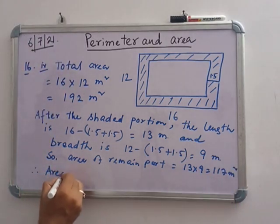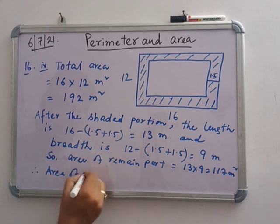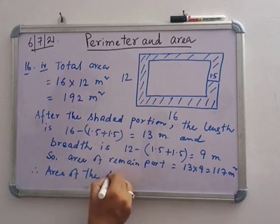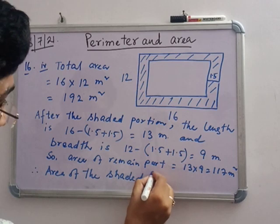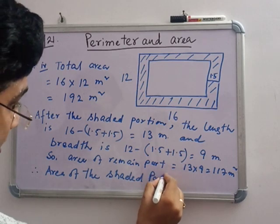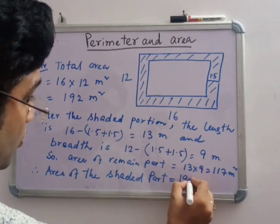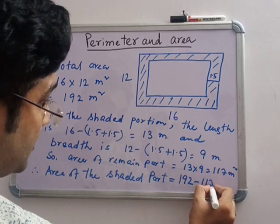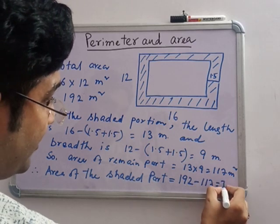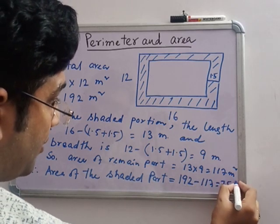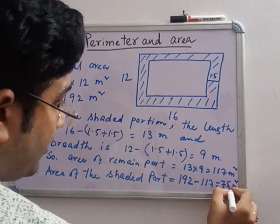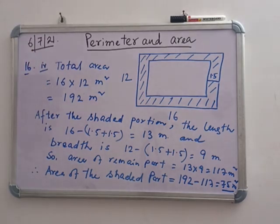Area of the shaded part equals 192 minus 117, which is 75 m². This is the answer — 75 m².